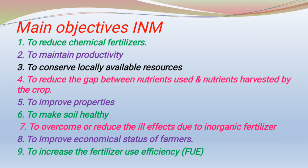Locally available resources include inorganic and organic fertilizer such as compost, manures, biofertilizer, and other sources. Also, an objective is to reduce the gap between nutrient used and nutrient harvested by the crop — that is, nutrient uptake by the plant — reducing the gap between nutrient applied and nutrient uptake.